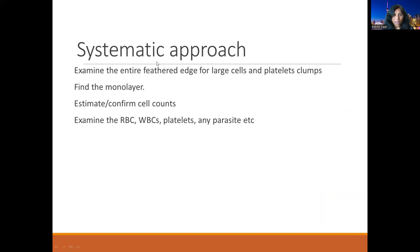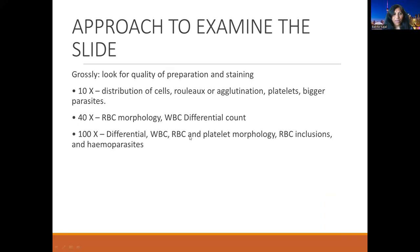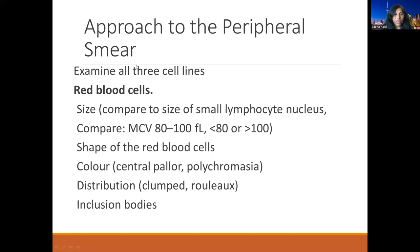Once we have a nicely made and well-stained slide, we should have a proper approach. First, look for the quality of the slide, then look at the entire feathered edge for large cells or large platelet clumps. Find your monolayer, then estimate and confirm the cell counts, and go systematically — looking at RBCs, WBCs, platelets, and then any additional findings. Grossly check quality of preparation and staining; at 10x, look for distribution of cells, agglutination, rouleaux formation, large platelet clumps, or larger cells. At 40x and 100x, examine the morphology of different components.